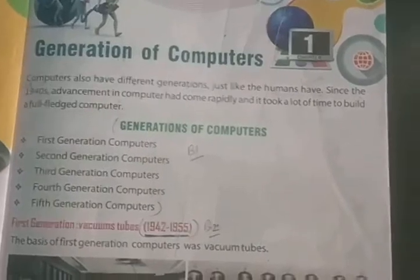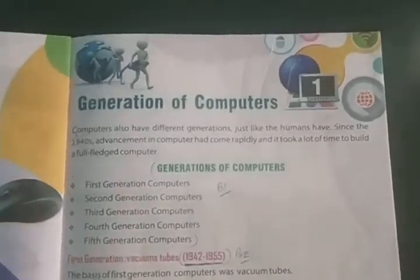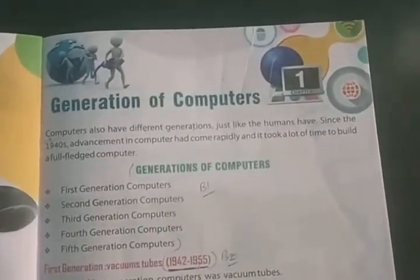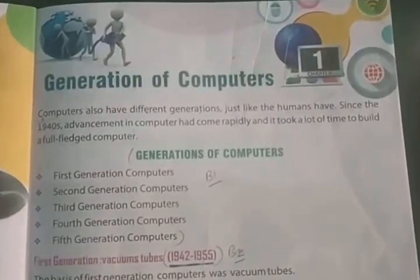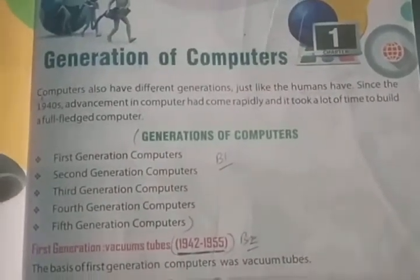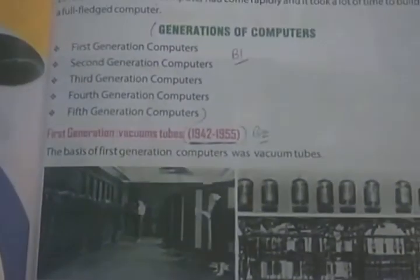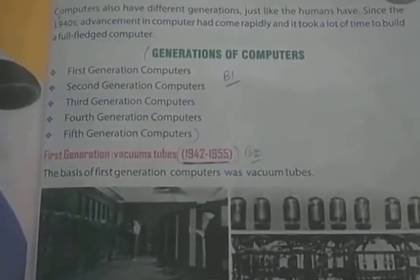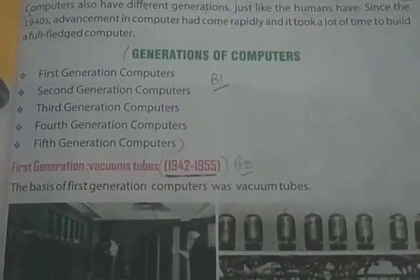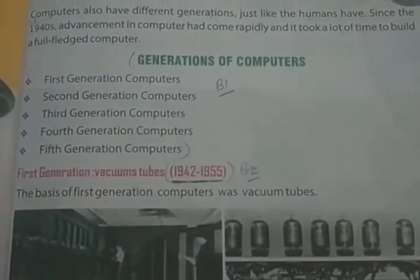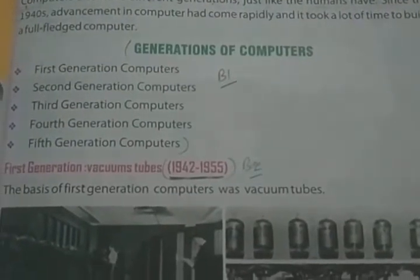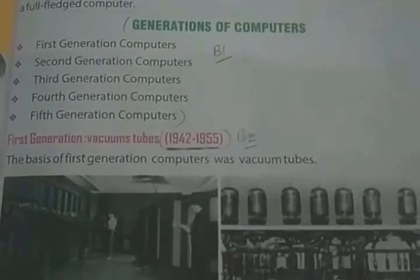The advancement started and it took a lot of time to build a full-fledged computer. There are 5 generations of computers: 1st generation, 2nd generation, 3rd generation, 4th generation, and 5th generation computers.